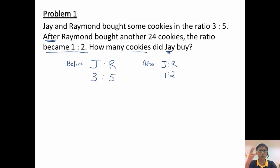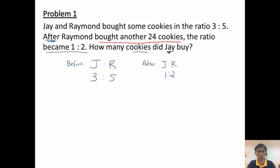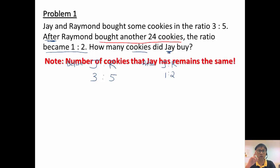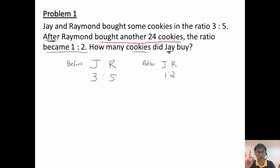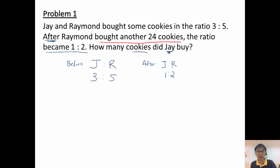Now let's think about what changed. Raymond changed because Raymond bought another 24 cookies. Did Jay change? No. So Jay is the one that remained unchanged — the number of cookies Jay has stays the same. Before, Jay has 3 units; after, Jay has 1 unit. Since nothing changed for Jay, I can make them equal. So I can make Jay the same by multiplying: 1 times 3 gives 3.